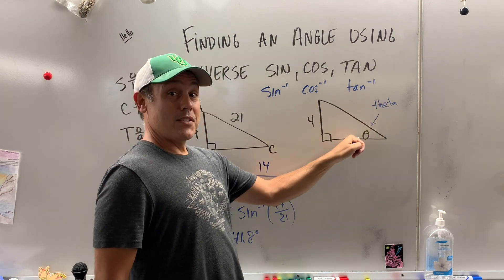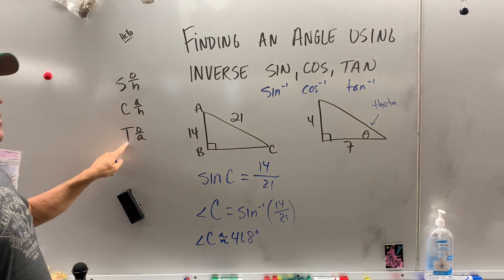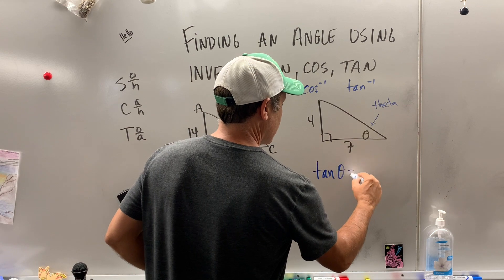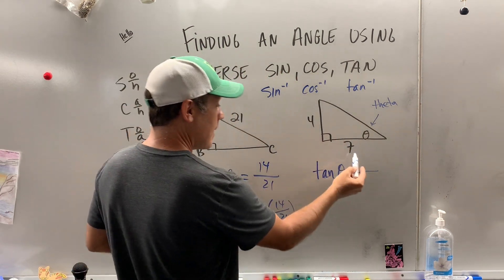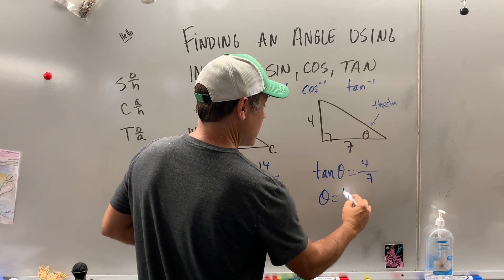This is the opposite and this is the adjacent. So that sounds like opposite, that is tangent. So if we take the tangent of theta, that is equal to our alley, through our alley, 4 over 7. So theta is going to be equal to what?